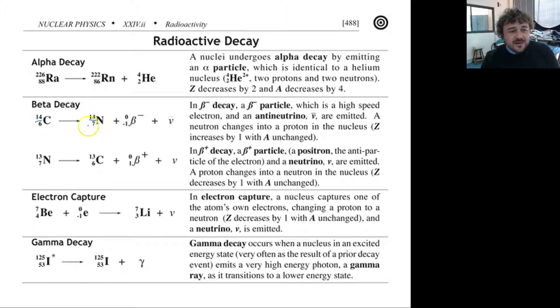So you'll notice that the mass doesn't change. The mass stays the same but the atomic number changes. This is beta negative because what's happened is one of the neutrons in there has gone from being neutral to being positive, and because you can't upset the balances when it's done that it's also let off an electron.